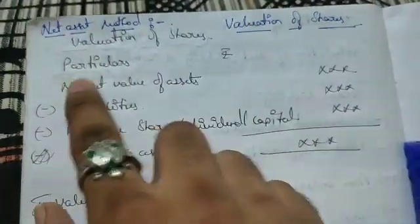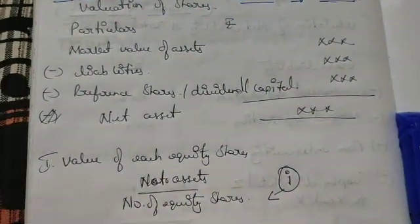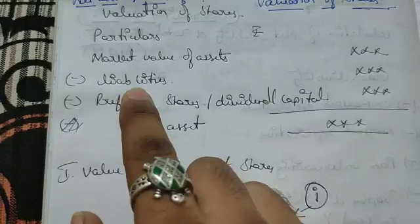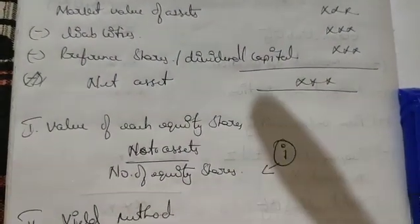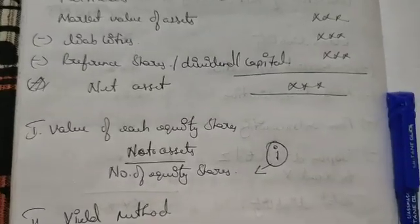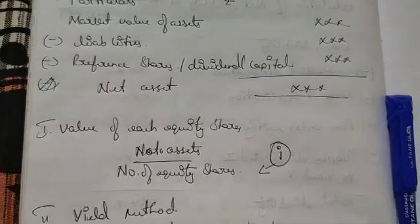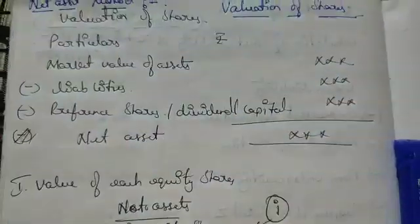Valuation of shares: Market value of assets - first take down all the assets, then minus liabilities. All the liabilities which are on the liability side - all the liabilities except preference. For expenses, few expenses in the asset side we will not take; we will take in liabilities all expenses.